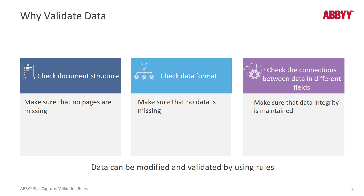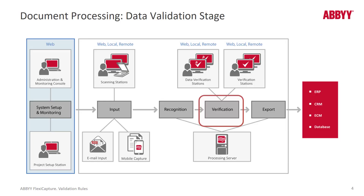You can also modify data and perform normalization by using rules. Rules are actually executed on recognition. But if a rule is executed and there's a rule violation that can't be automatically fixed and adjusted by the rule, then a verification stage is triggered. In other words, that field is marked for verification, and when a verifier comes in they can see exactly what the rule violation is and how to fix it.